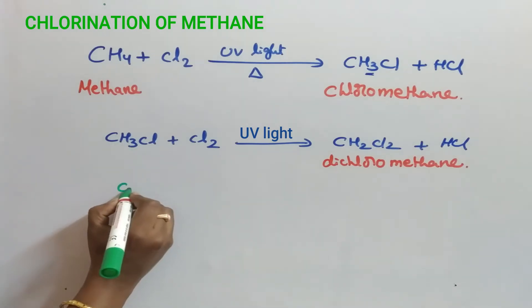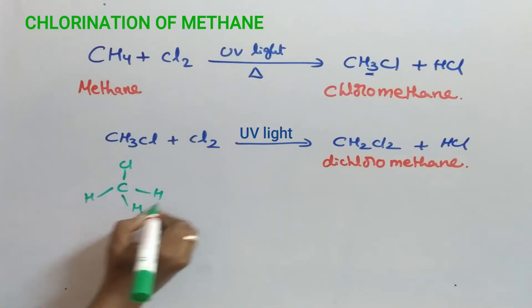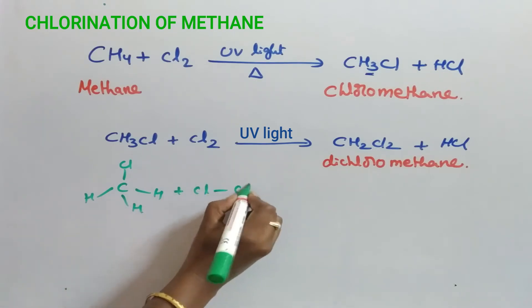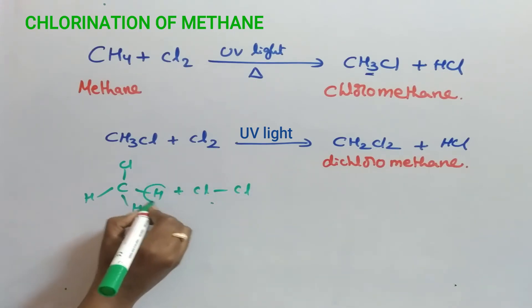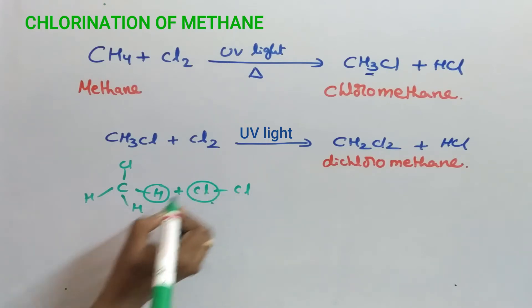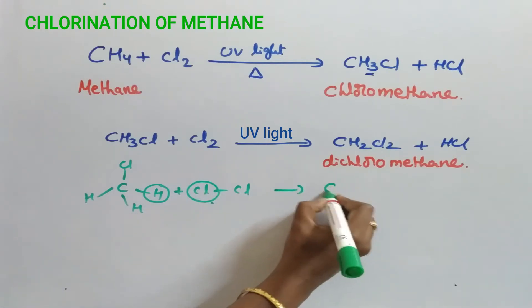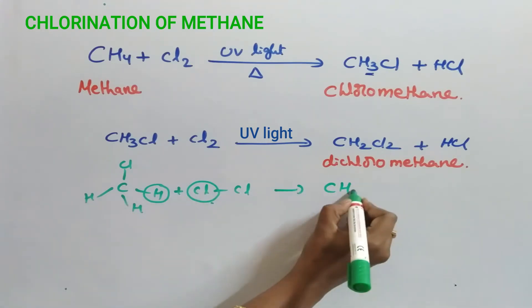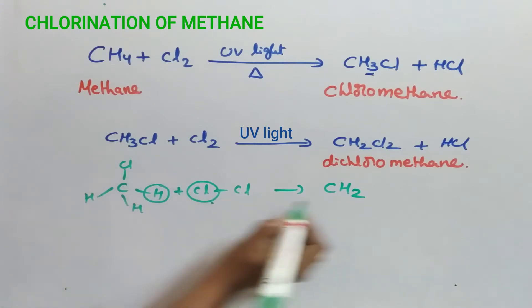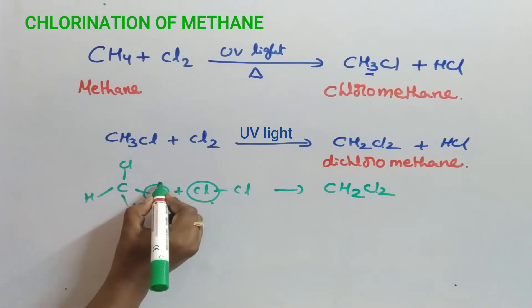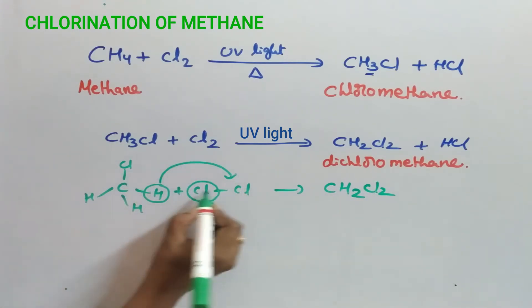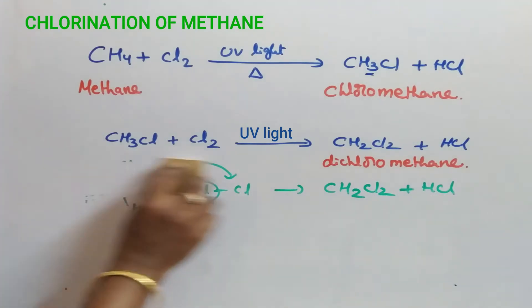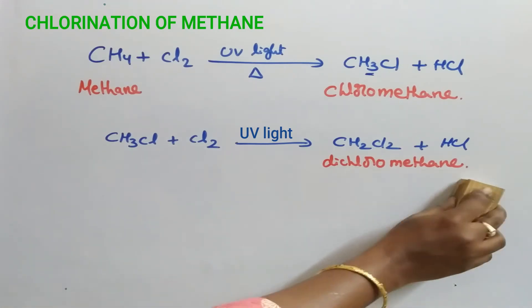See the structure. Here one of the hydrogens is replaced by chlorine and thereby forms CH2Cl2, and this hydrogen reacts with chlorine and thereby forms HCl. For better understanding I've written it like this, so no need to mention this.